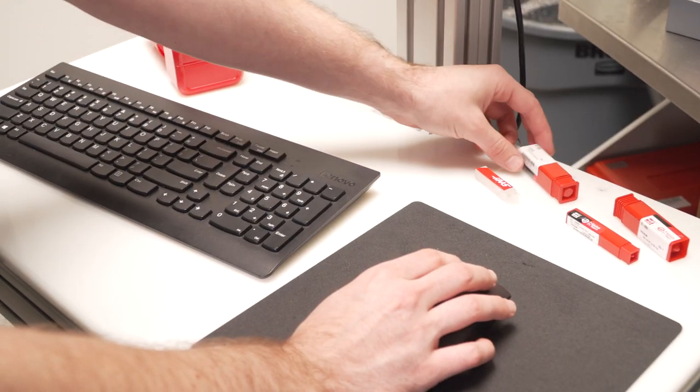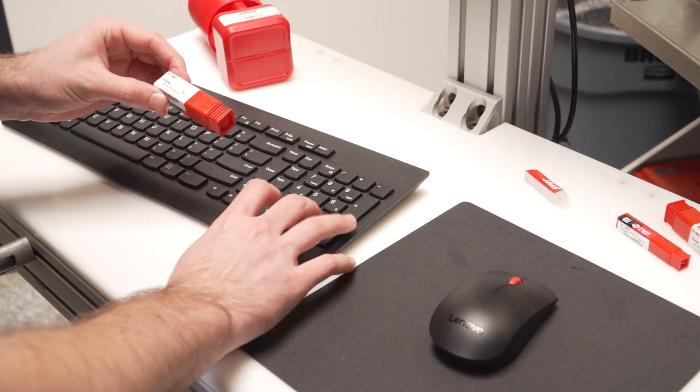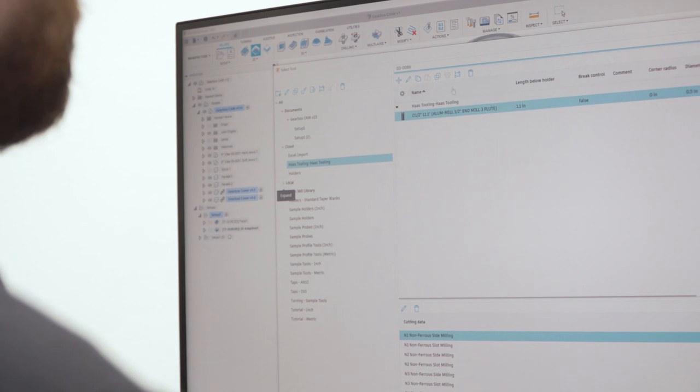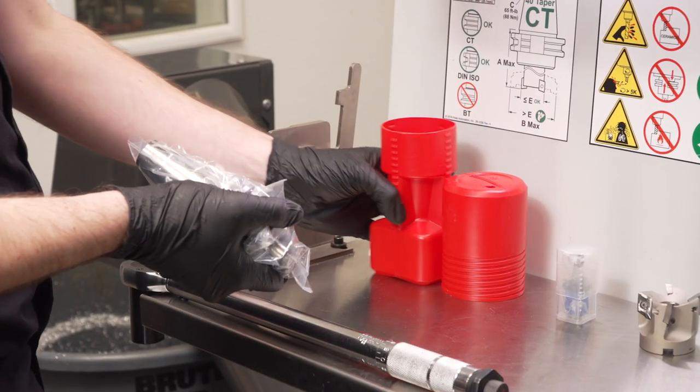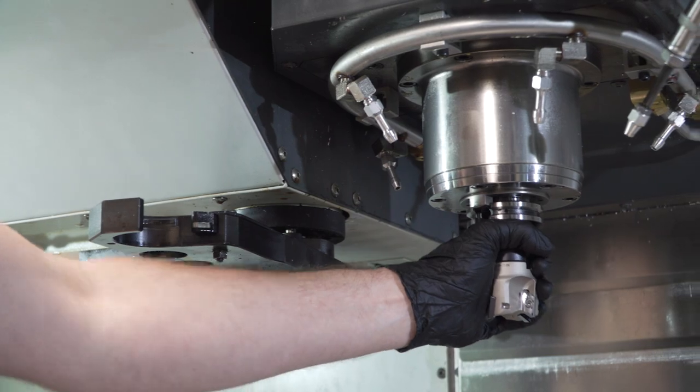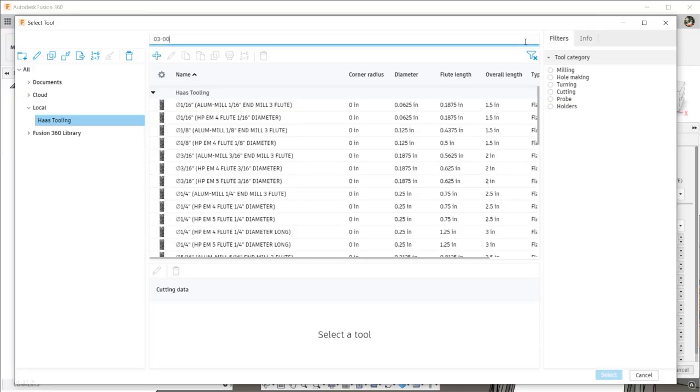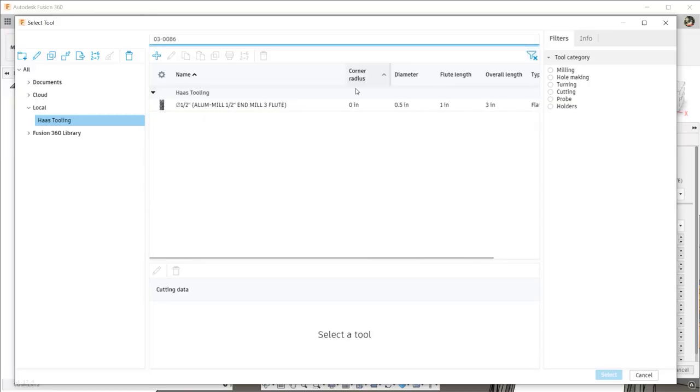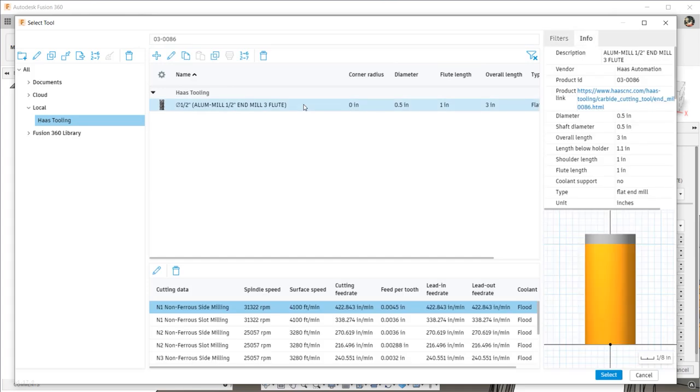There's also a wide range of cutting tools and tool holders available from the Haas tooling website, and these tools are available through the Fusion 360 tool library. Simply search for the geometry you need or the product IDs you have. Selecting a tool will also bring up the Haas suggested feeds and speeds for different cut types and materials.